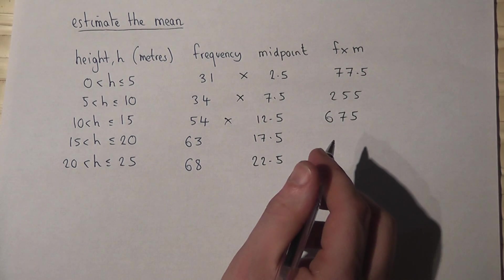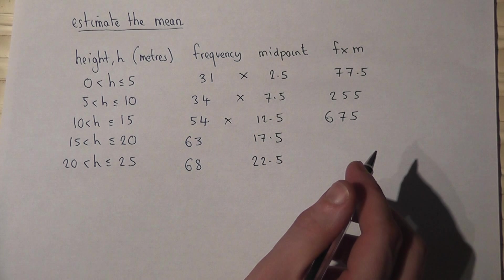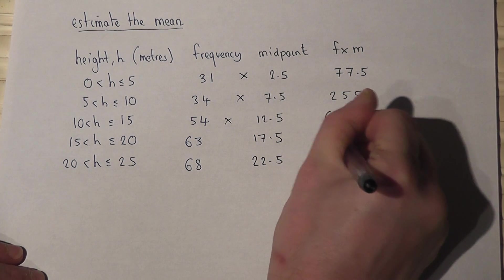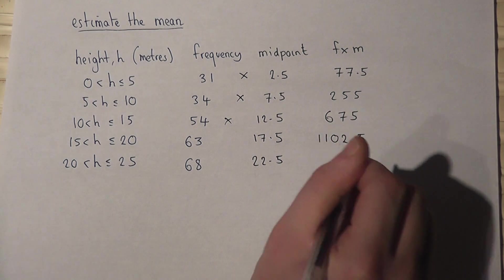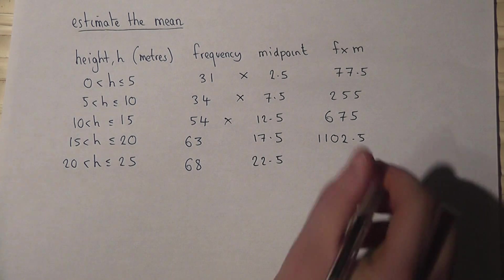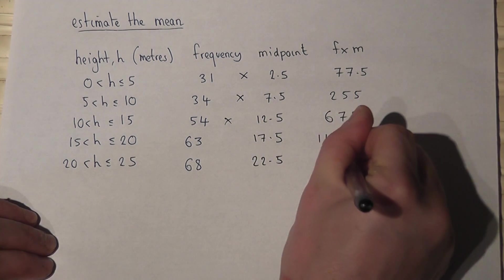I've got 63 lots of 17.5, which works out at 1,102.5. And finally, 68 lots of 22.5, which works out at 1,530.